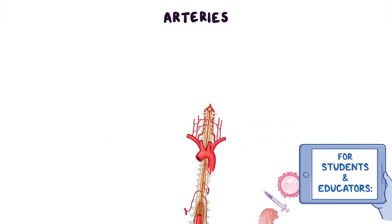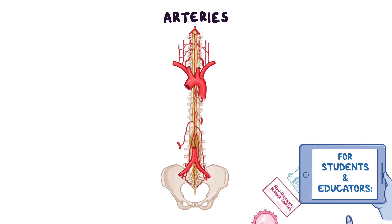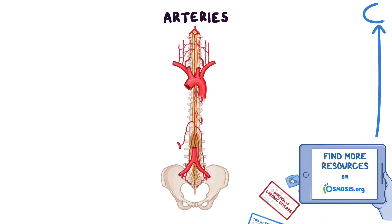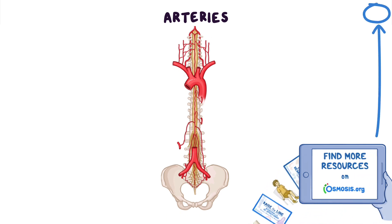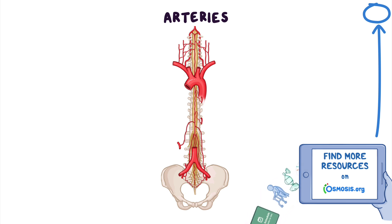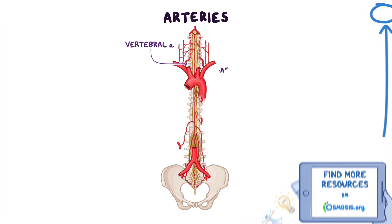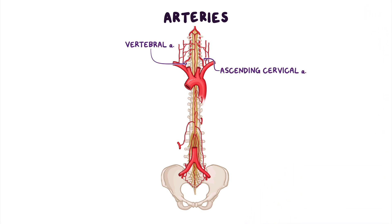Let's start with the arteries of the vertebrae, which arise from various larger parent arteries depending on the level of the vertebral column. In the neck, parent arteries include the vertebral and ascending cervical arteries. In the thorax, the posterior intercostal arteries. In the abdomen, they include the subcostal and lumbar arteries.